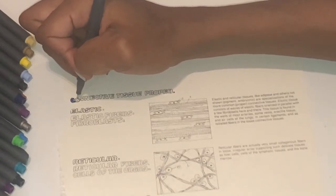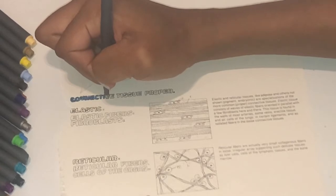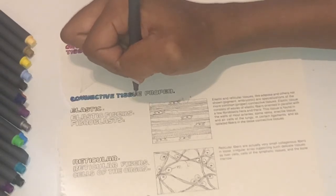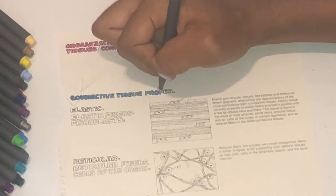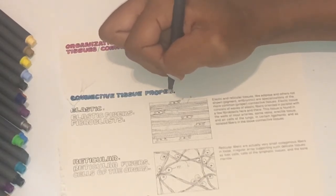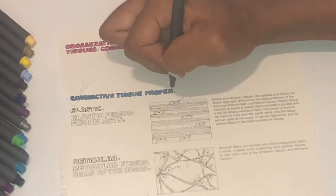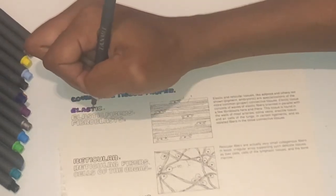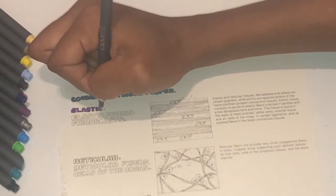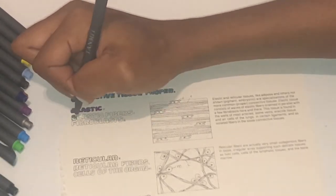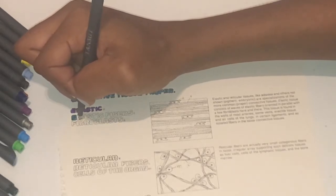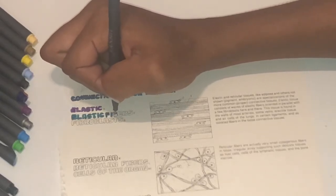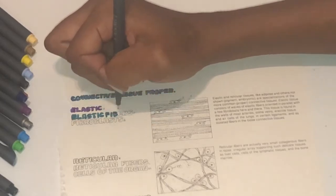This category includes the connective tissue proper. I'm coloring that in like this teal blue color. And under that is the elastic, which consists of elastic fibers along with fibroblasts. I'll color in a sea green color. And the fibroblasts, I will color in orange.